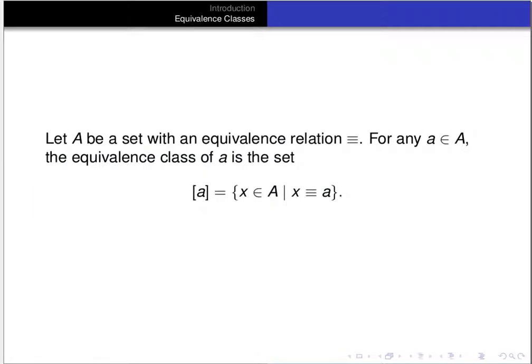When we have an equivalence relation, we can define an equivalence class for every element of the set the equivalence relation is defined on. Let A be a set with an equivalence relation. For any element A in the set A, the equivalence class of A is the set of all X in A such that X is related to A. So an equivalence class of an element is the set of all things related to that element.